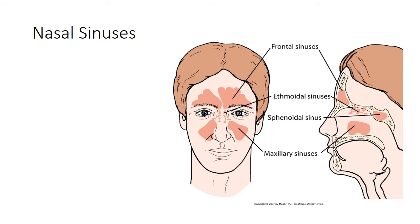Here is the picture of the nasal sinuses. The frontal sinuses are behind our forehead. The ethmoidal sinuses are straight back past the bridge of our nose, between our eyes. The sphenoid sinuses are behind that, and the maxillary sinuses are found behind our cheeks. We'll talk about sinusitis later in class and the signs and symptoms, which of course many of you know are pressure in these areas.